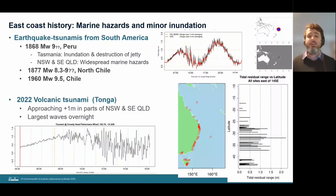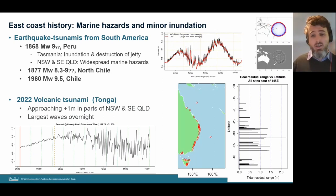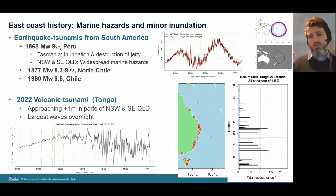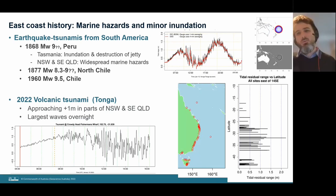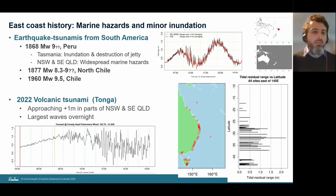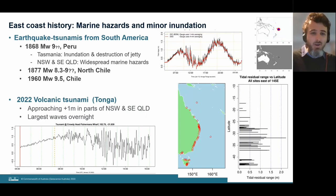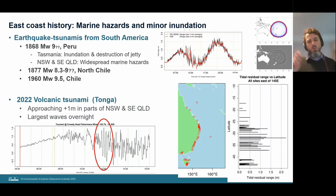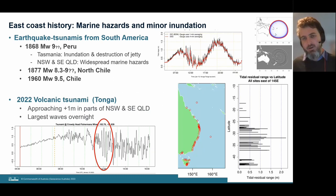In 2022, the volcanic tsunami from Tonga generated waves widely observed in New South Wales, Tasmania, and southeast Queensland — approaching plus one meter above sea level in some places, significant enough that emergency managers considered issuing land warnings for some offshore islands. Thankfully, the largest waves occurred overnight. At Crowdy Head, waves with a 12-minute period of about 1.8 meters were recorded — comparable to a spring tide range but occurring every 12 minutes rather than every 12 hours, implying very significant currents.